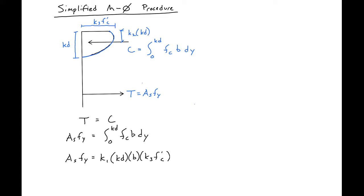We can then use this expression to find the depth of our neutral axis by solving for Kd. So we'll find that our Kd is equal to our Asfy divided by K1 times B times our K3 F'c.